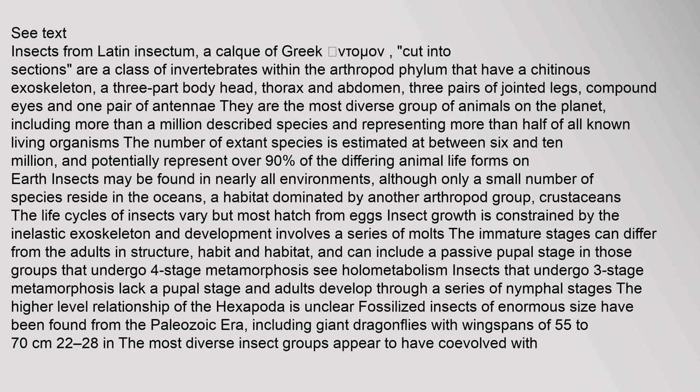The life cycles of insects vary but most hatch from eggs. Insect growth is constrained by the inelastic exoskeleton and development involves a series of molts. The immature stages can differ from the adults in structure, habit and habitat, and can include a passive pupal stage in those groups that undergo four-stage metamorphosis. Insects that undergo three-stage metamorphosis lack a pupal stage and adults develop through a series of nymphal stages. The higher-level relationship of the hexapoda is unclear.